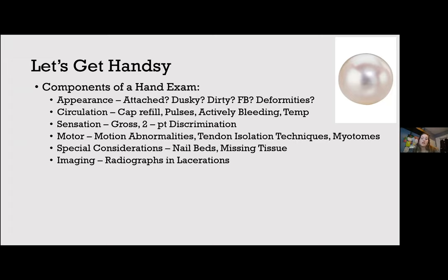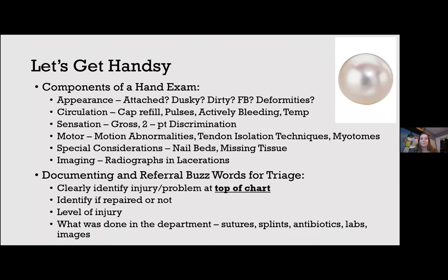Ultrasound and POCUS have been used to identify foreign bodies for some time. A 2009 study by Sabu et al. demonstrated both radiolucent and radioopaque foreign bodies could be identified with sensitivities between 94–98% in 123 patients using a 7.5 MHz transducer. POCUS is also useful for evaluating digital pulses, identifying hand abscesses, and distinguishing flexor tenosynovitis from cellulitis. A 2008 study by Jardin et al. showed formal ultrasound had 94% sensitivity, 74% specificity, and 97% negative predictive value for infectious tenosynovitis.